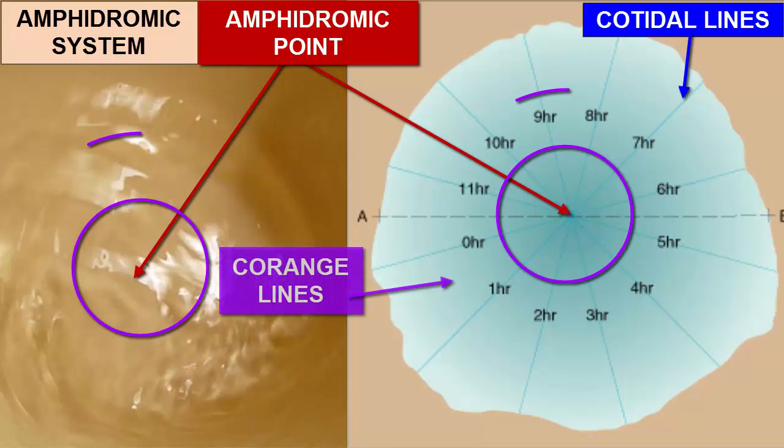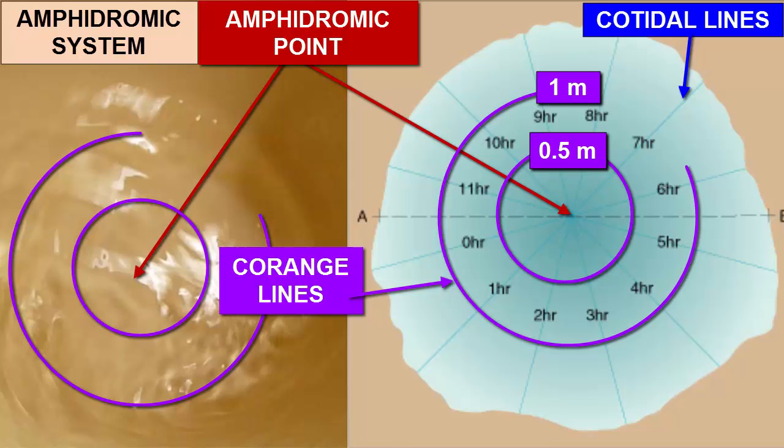The concentric circles are called corange lines because everywhere along each circle locations are equidistant from the center of the bucket, the amphidromic point, and therefore they experience the same difference between high tide and low tide, or the same tidal range.